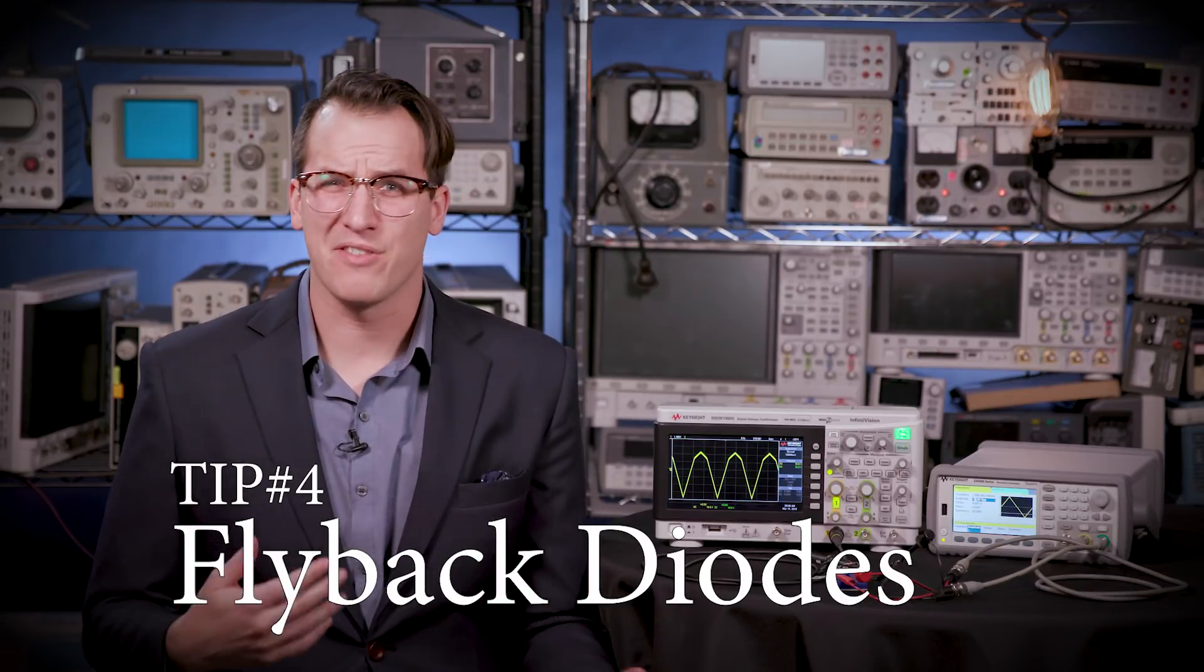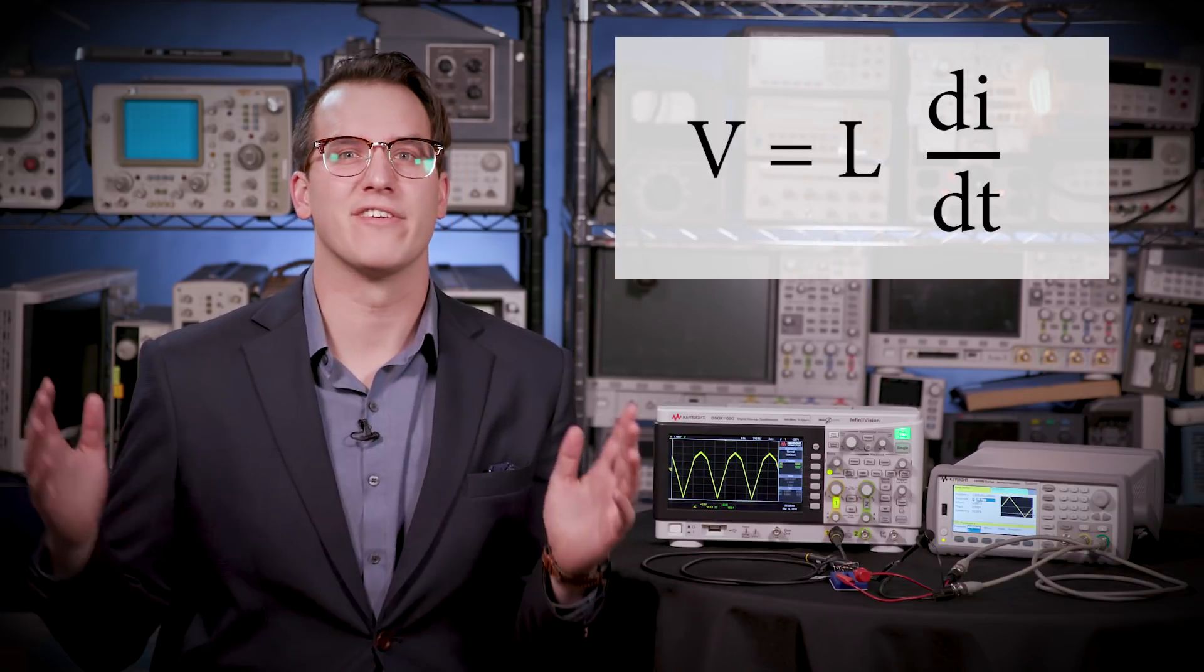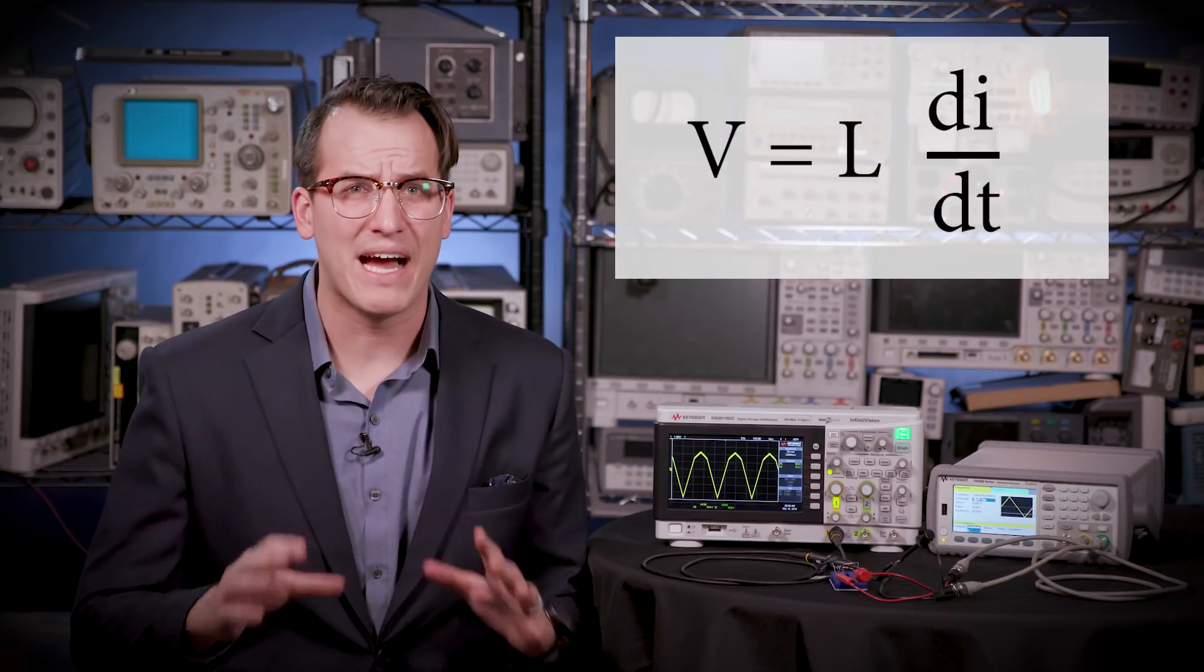Flyback diodes. Flyback diodes are the pressure release valves of the electronics world. Because inductors resist a change in current, you can't just instantaneously turn them off. They'll fight back against the control circuitry to the point that it can shorten its life or blow it up altogether. This is known as an inductive kick. So you can add a flyback diode in parallel with the inductor.